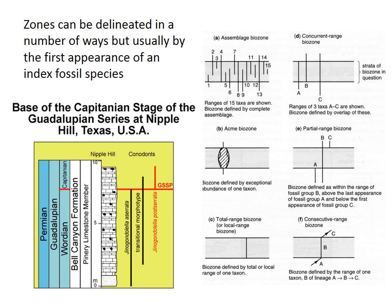The most common method uses the first appearance of a chosen index species. For example, the base of the Capitanian stage in the Permian has its global definition based on the first appearance of the conodont species Jinogondolella postserrata, actually at a specific site in West Texas.